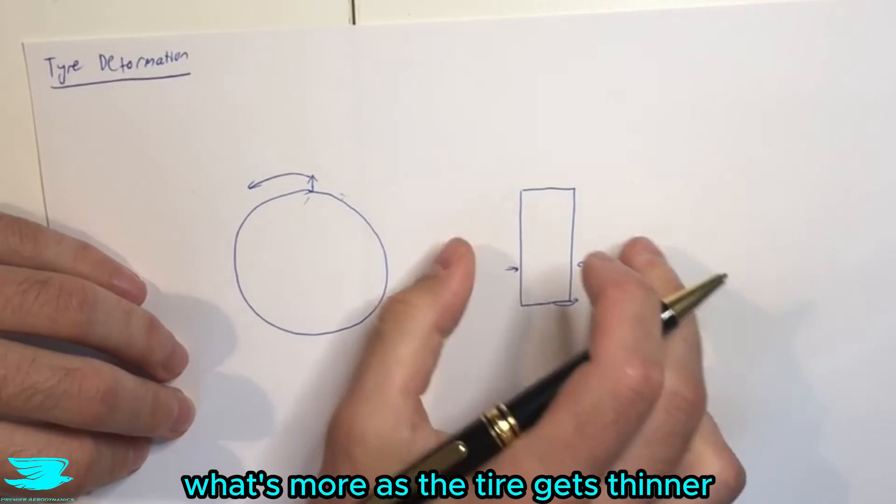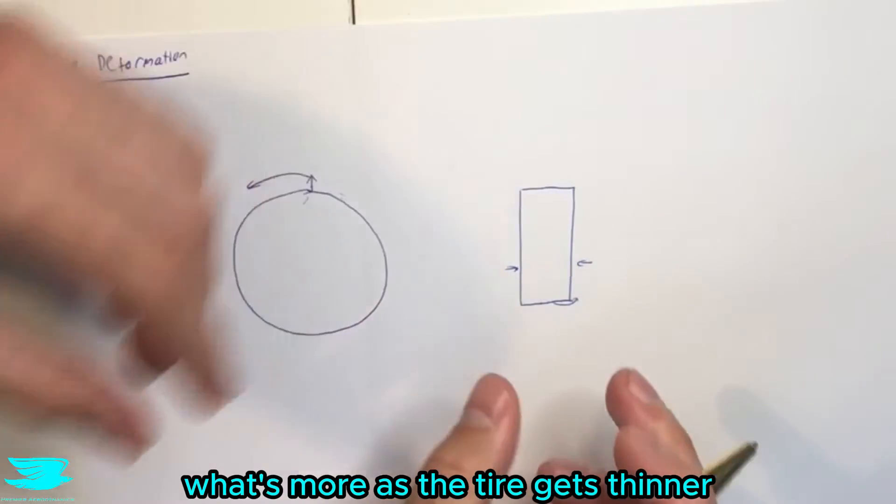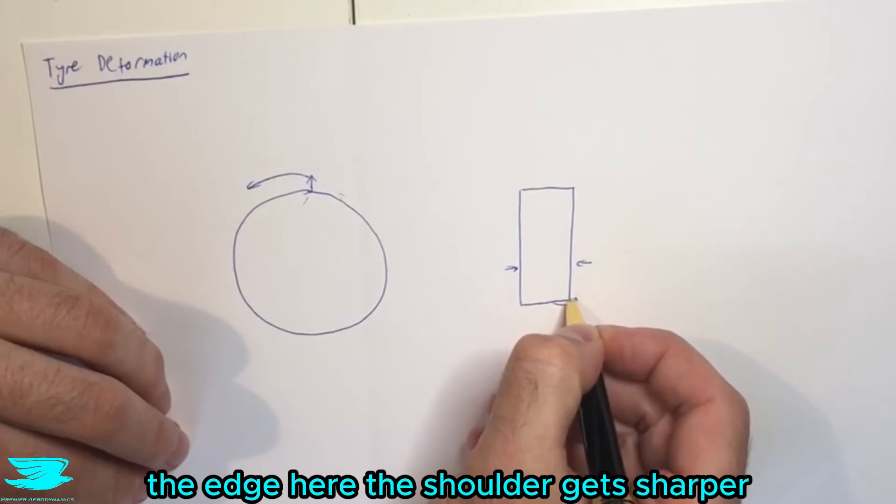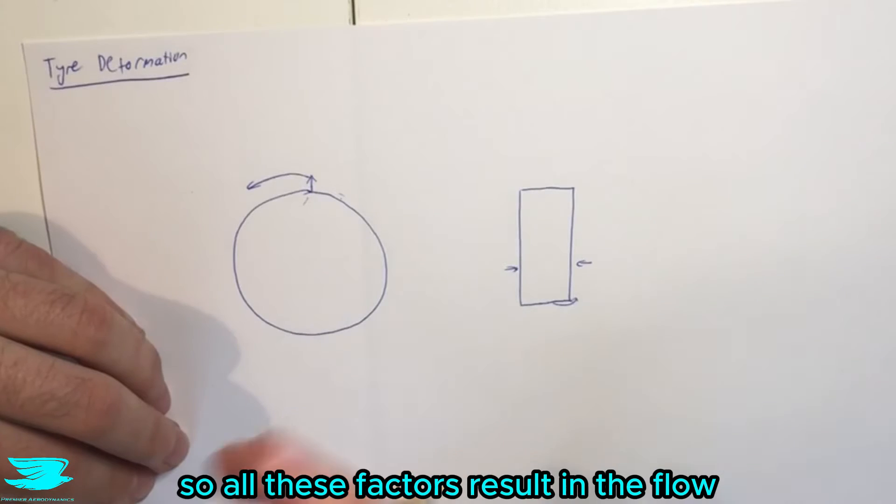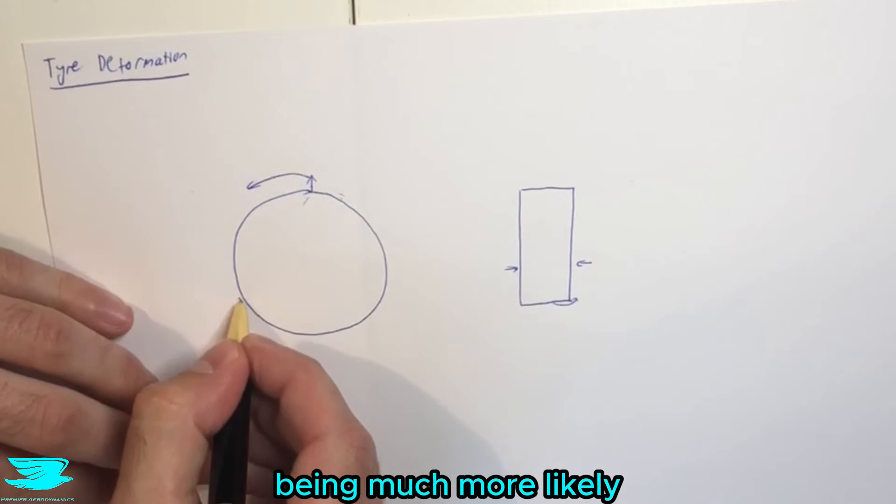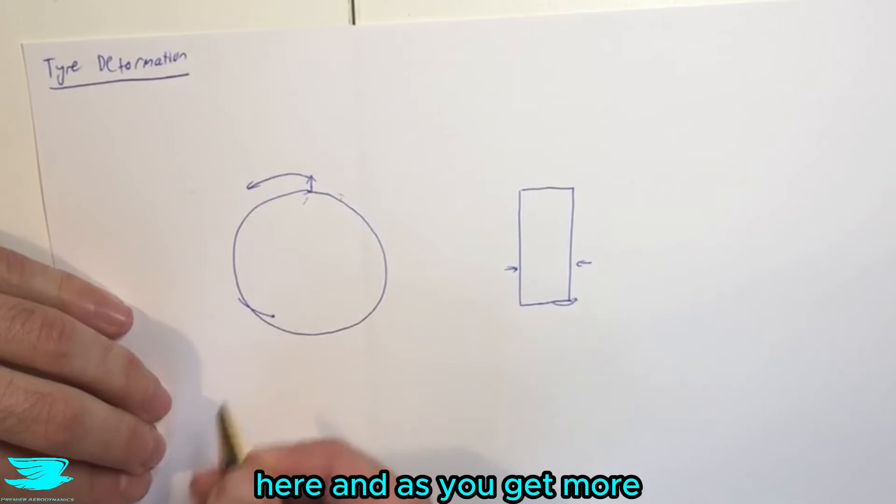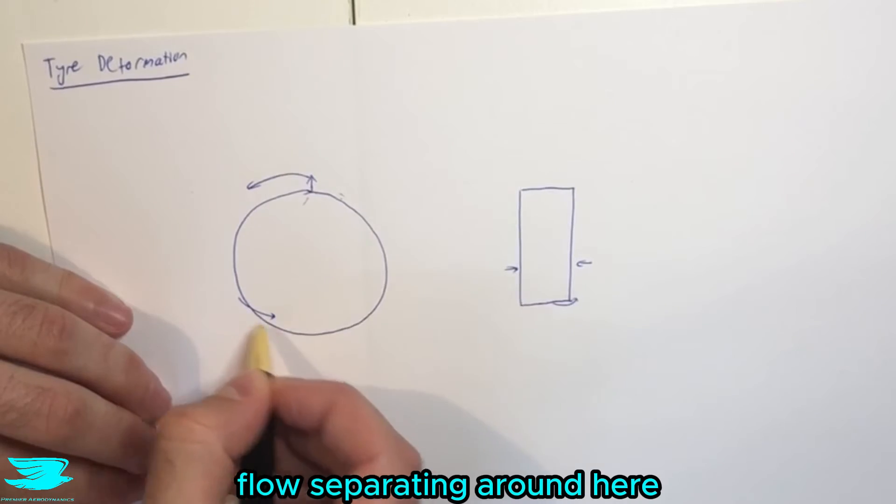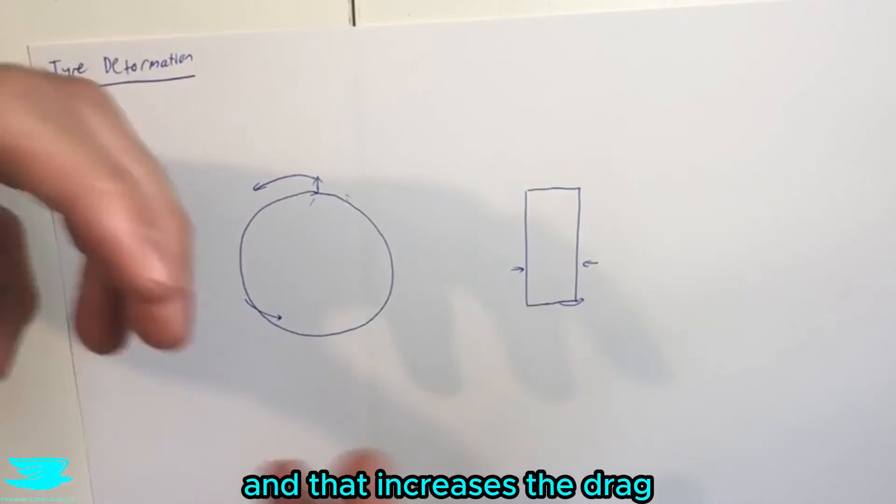What's more, as the tire gets thinner, the edge here, the shoulder, gets sharper. So all these factors result in the flow being much more likely to separate around this edge here. And as you get more flow separating around here, you get a greater wake and that increases the drag.